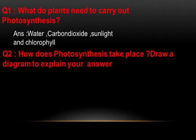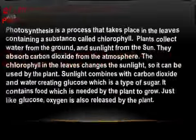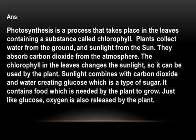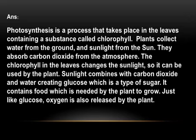Question number 2: How does photosynthesis take place? Draw a diagram to explain your answer. Photosynthesis is a process that takes place in the leaves containing a substance called chlorophyll. Plants collect water from the ground and sunlight from the sun. They absorb carbon dioxide from the atmosphere. The chlorophyll in the leaves changes the sunlight so it can be used by the plant. Sunlight combines with carbon dioxide and water, creating glucose, which is a type of sugar. It contains food which is needed by the plant to grow. Just like glucose, oxygen is also released by the plant.